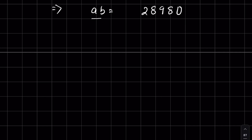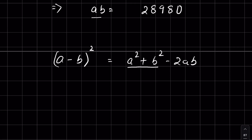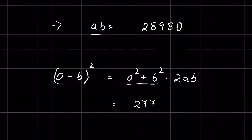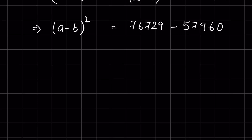Now let's compute (a minus b) squared. Expanding: a squared plus b squared minus 2ab equals 277 squared minus 2 times 28980, which gives (a minus b) squared equals 76729 minus 57960, so (a minus b) squared equals 18769.